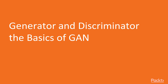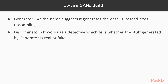We move on to Generator and Discriminator — the basics of GANs. The biggest question is: how are GANs built? They are built using two neural networks: one is the Generator and the other is the Discriminator. The Generator generates data and does the upsampling — you can think of it like a thief. The Discriminator works as a detective, which tells whether the stuff generated by the Generator is real or fake. Both networks work in harmony with each other.